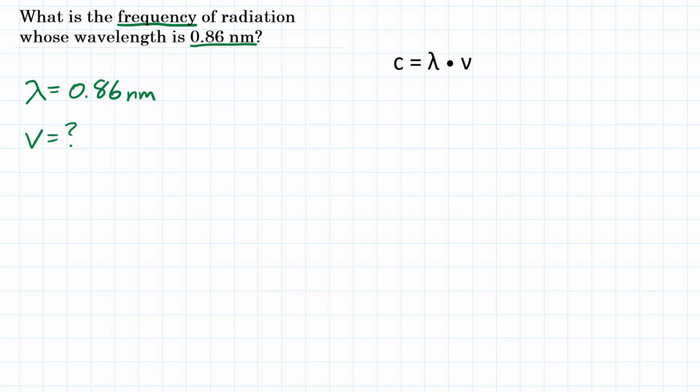We're going to use this equation over here where the speed of light, which is C, is equal to wavelength times frequency. So we need the speed of light and that is a constant. So we know that value. The speed of light is 3.00 times 10 to the eighth meters per second.